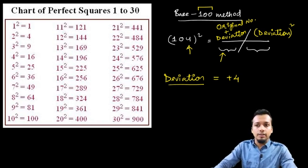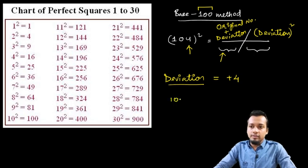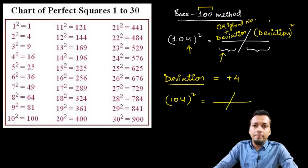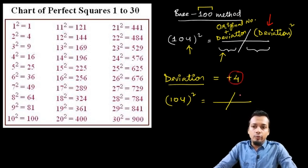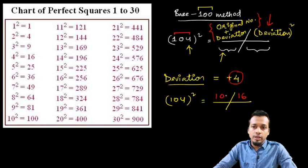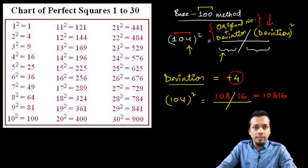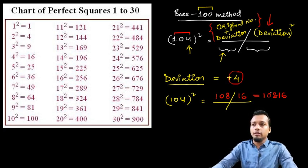Now, how do we find the answer for 104 squared? This is very easy. On the right side I write the deviation square: deviation is 4, so 4 squared is 16, I write 16. On the left side I write the original number plus deviation: 104 plus 4 is 108. So the answer is 10816.